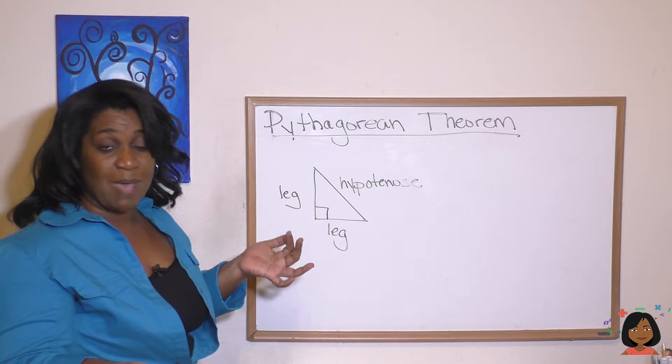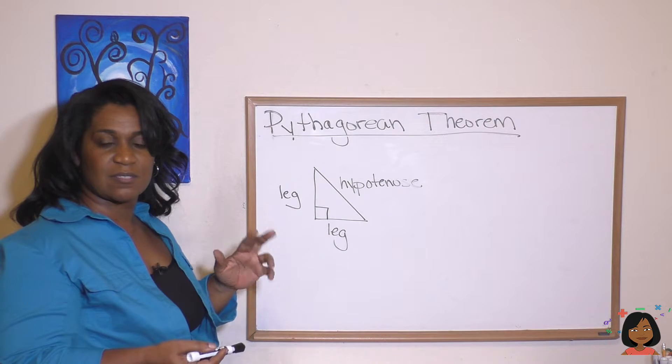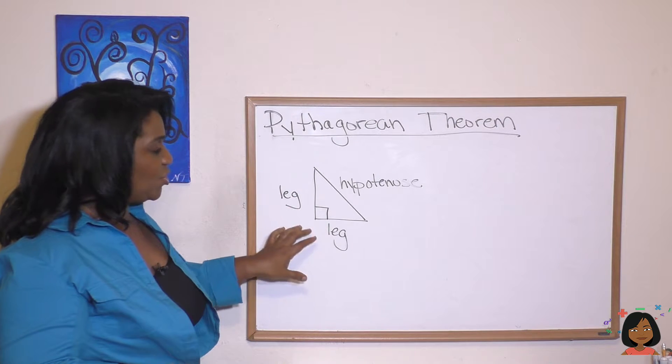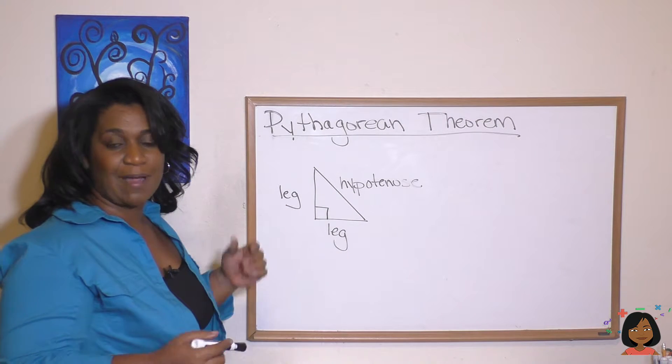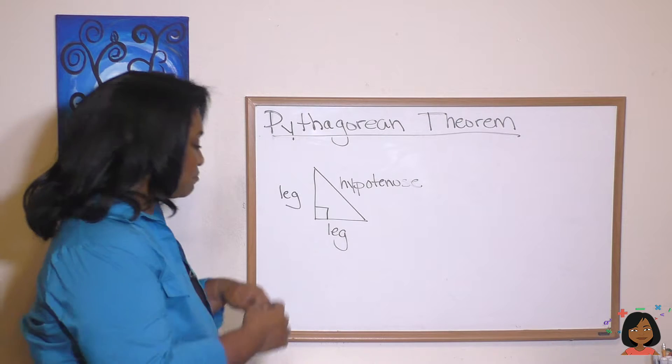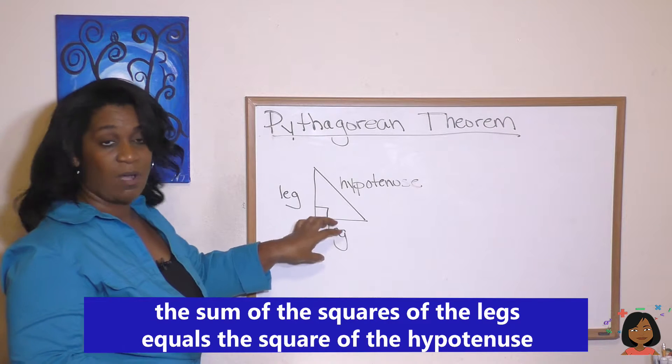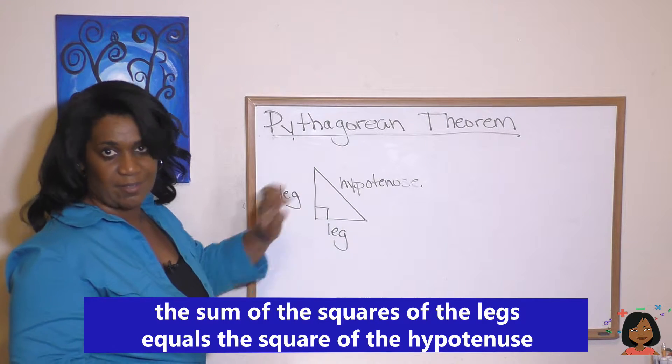So there was this Greek mathematician, his name was Pythagoras, and he came up with this theorem that there was a relationship between the legs and the hypotenuse of a right triangle. Do you want to know what he came up with? Well, here's what he said.